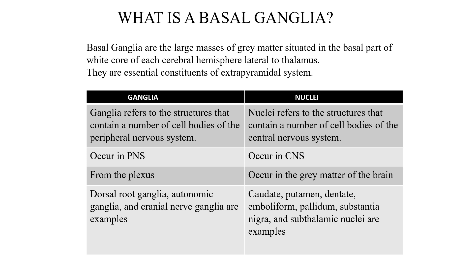A basic difference between ganglia and nuclei: ganglia refers to structures containing cell bodies of the peripheral nervous system, whereas nuclei refers to structures containing cell bodies of the central nervous system. Ganglia occur in the PNS — examples include dorsal root ganglia, autonomic ganglia, and cranial nerve ganglia. Nuclei examples include caudate, putamen, dentate, emboliform, pallidum, striatum, substantia nigra, and subthalamic nuclei.